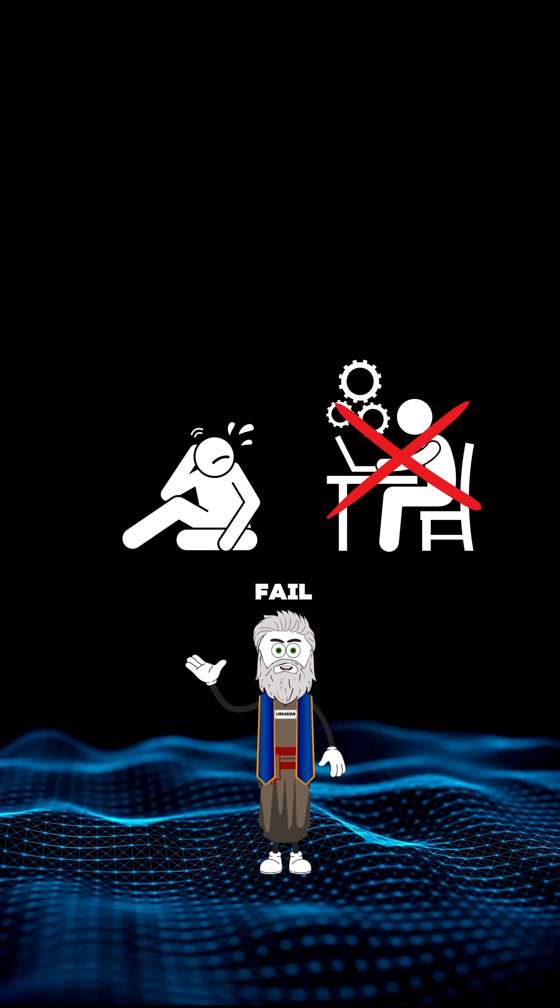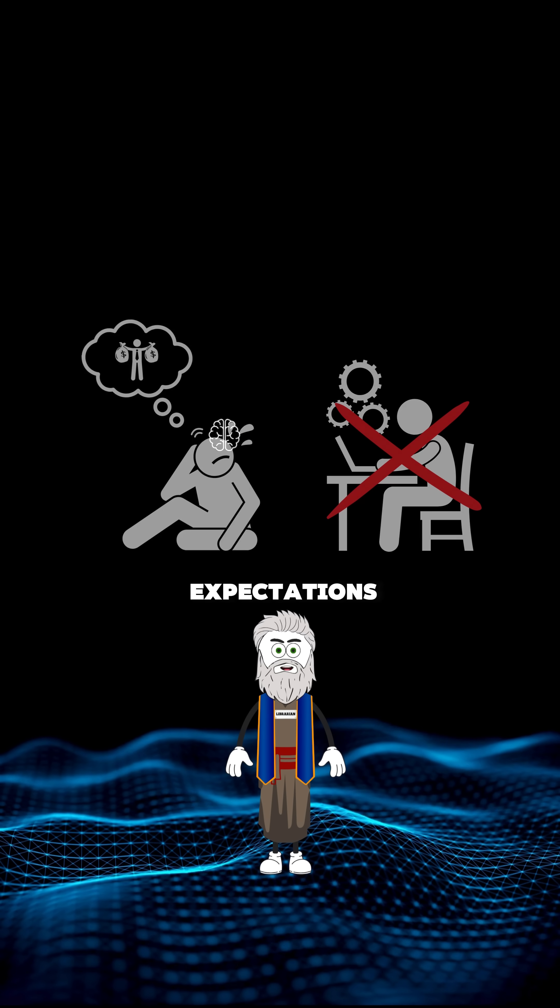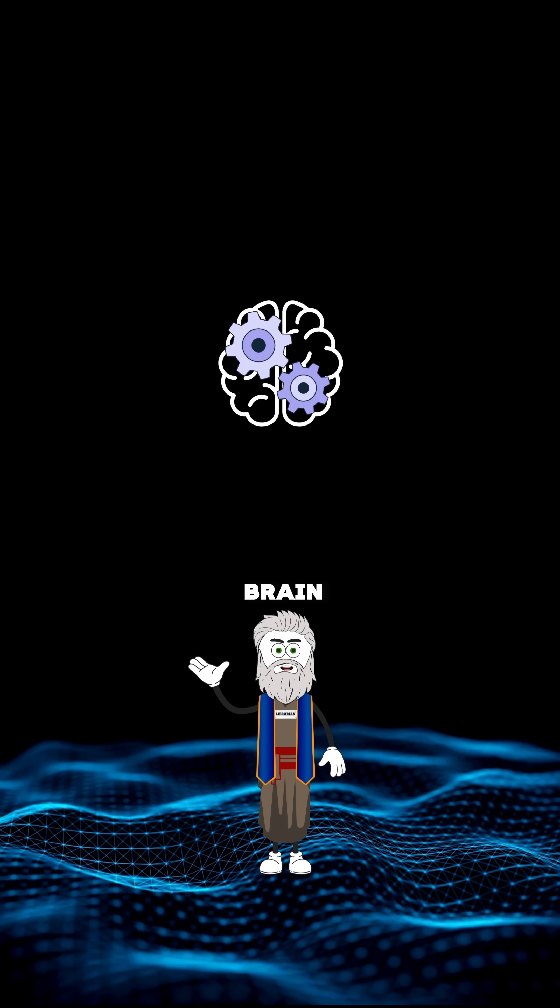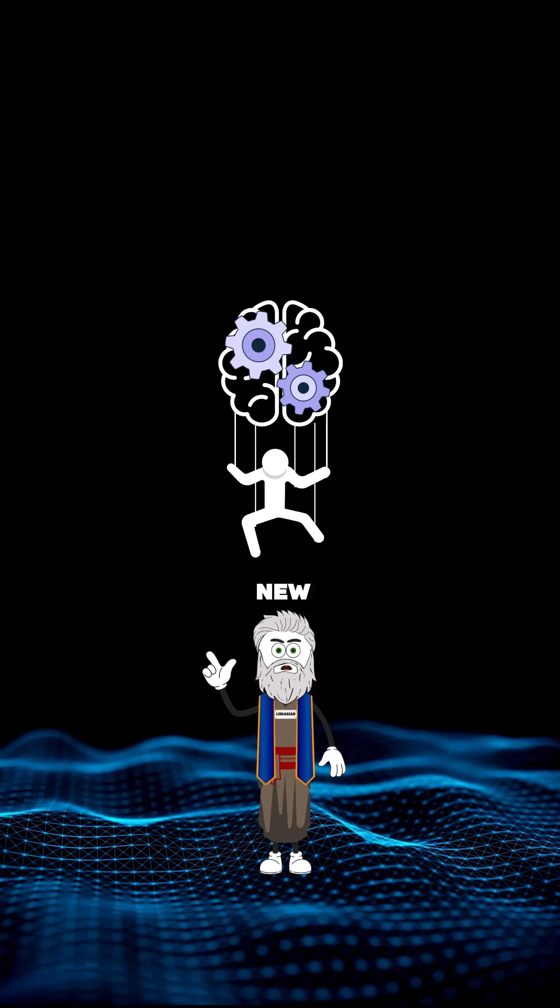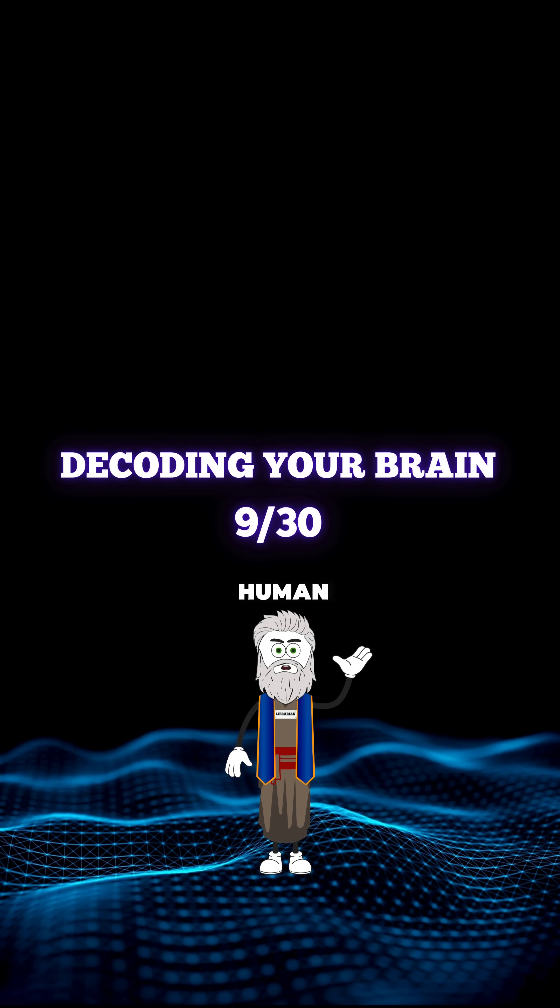The reason you never try again after you fail once is because your expectations triggered a protection mechanism in your brain that automatically shuts down any new effort. This is day 9 of decoding the human brain.